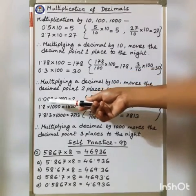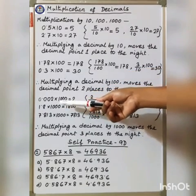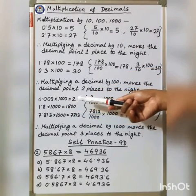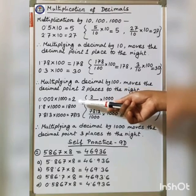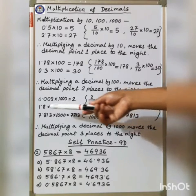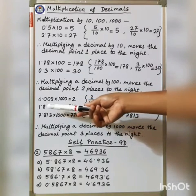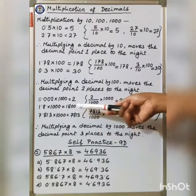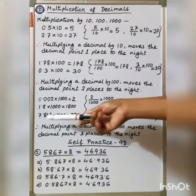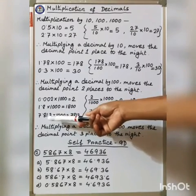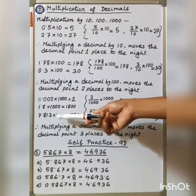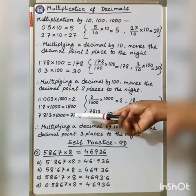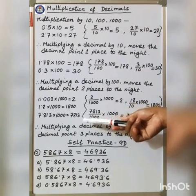Next: 0.002 into 1000 is equal to 2. And 1.8 into 1000 is equal to 1800. And 7.813 into 1000 is equal to 7813.